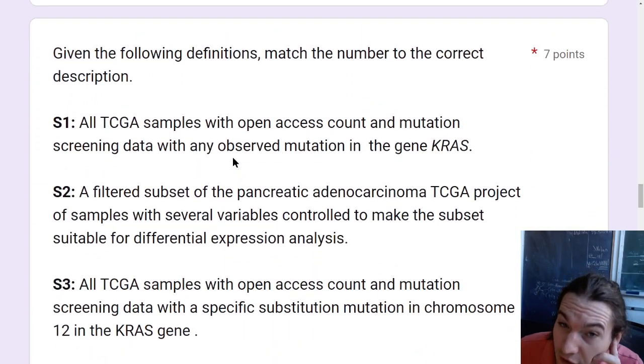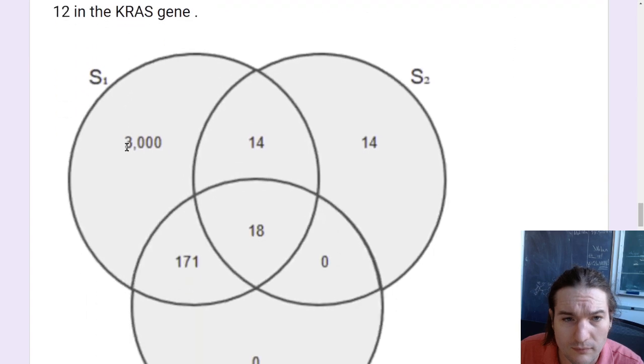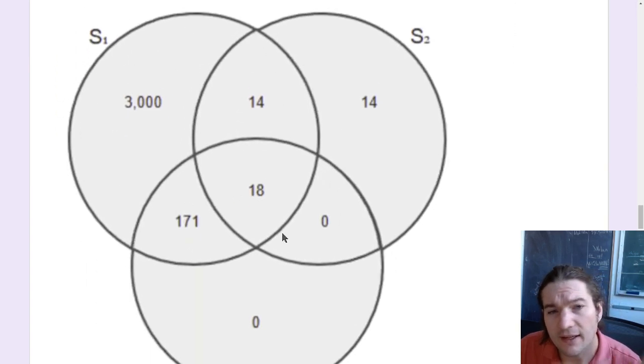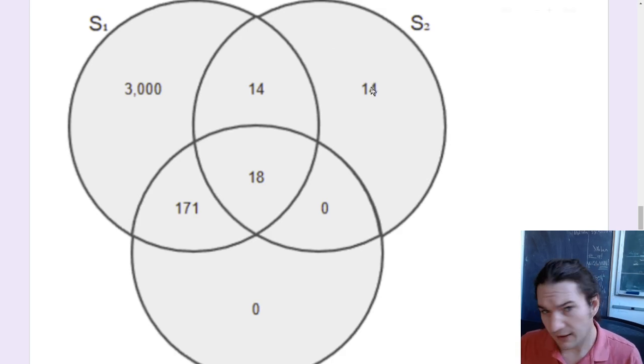All right. Given the following definitions, match the number to the correct description. All TCGA samples with open access count, mutation screening with any observed mutation in the gene KRAS, that is S1. So this is going to be any mutation in KRAS across most samples that we could possibly be interested in.